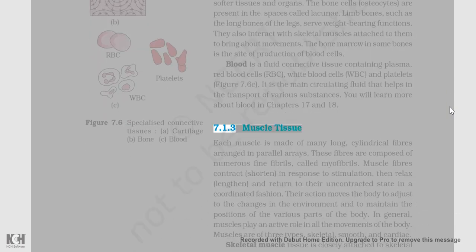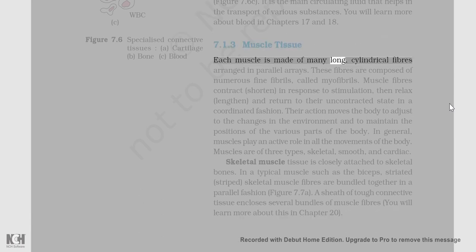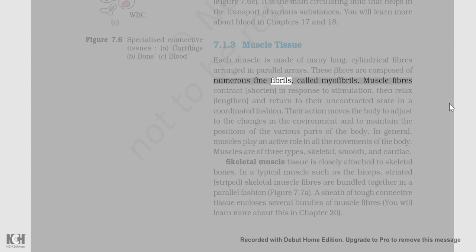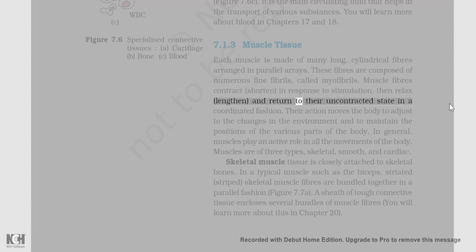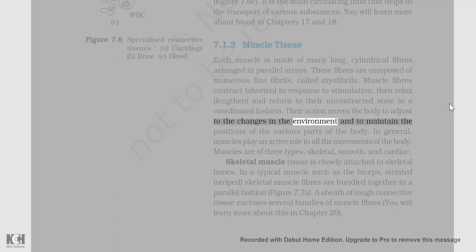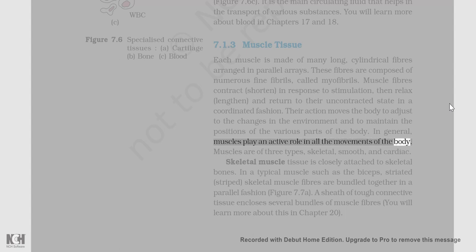Each muscle is made of many long, cylindrical fibers arranged in parallel arrays. These fibers are composed of numerous fine fibrils called myofibrils. Muscle fibers contract (shorten) in response to stimulation, then relax (lengthen) and return to their uncontracted state in a coordinated fashion. Their action moves the body to adjust to changes in the environment and to maintain the positions of various parts of the body. In general, muscles play an active role in all the movements of the body.